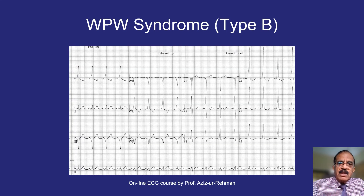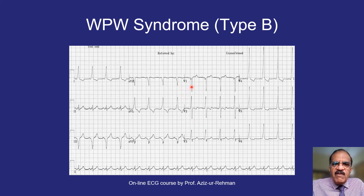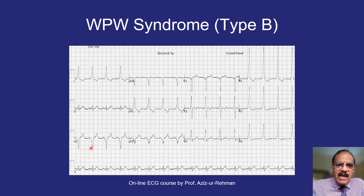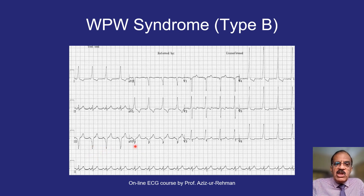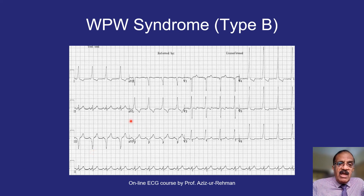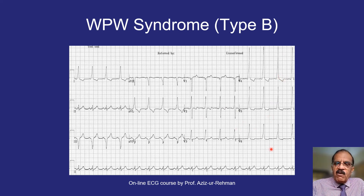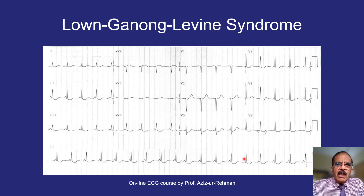This is Type B WPW, where the delta wave is inverted — it is downward in V1. You could easily confuse this complex with a QS complex. Similarly there are QS complexes in lead III and aVF, which could easily be confused with inferior wall infarction or anteroseptal infarction. Type B is very difficult and can give rise to false diagnoses. You also see hypertrophy and ischemic patterns here.